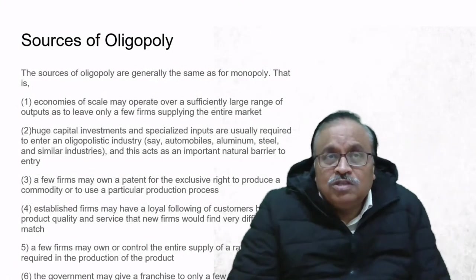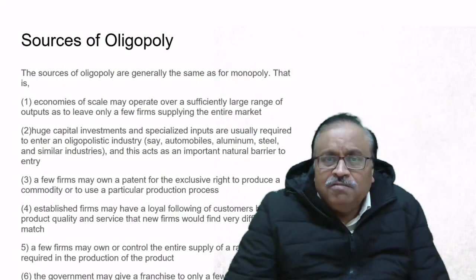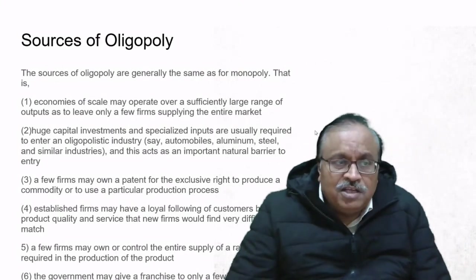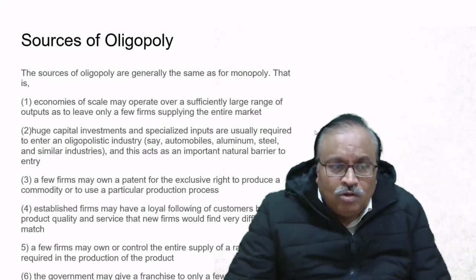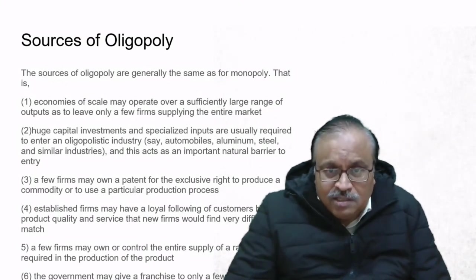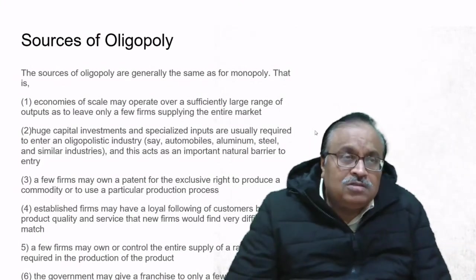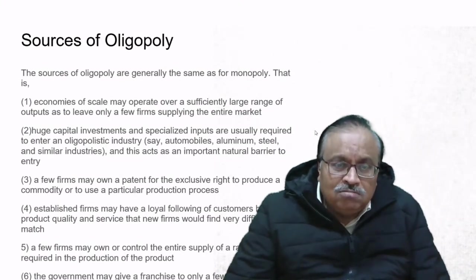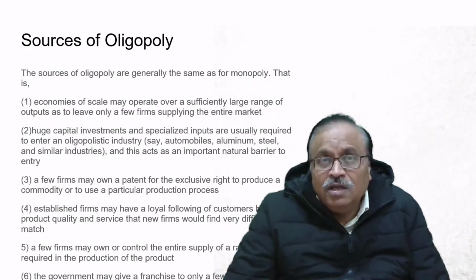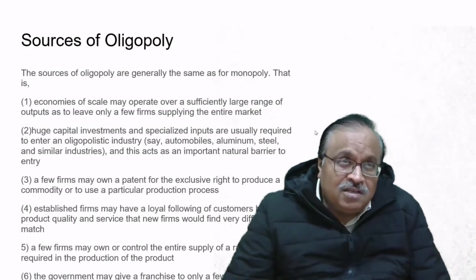The sources of oligopolies are generally the same as for monopoly. Economies of scale may operate over a large range of outputs, leaving only a few firms supplying the entire market. Huge capital investments and specialized inputs are required to enter an oligopolistic industry—producing aluminium, cars, or steel requires huge infrastructure, skill sets, and machinery, which acts as a deterrent.